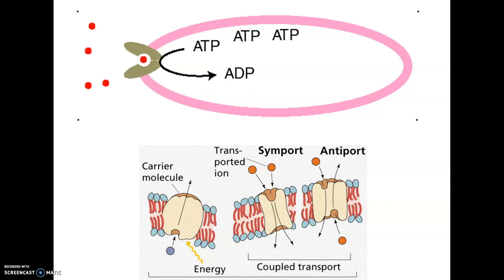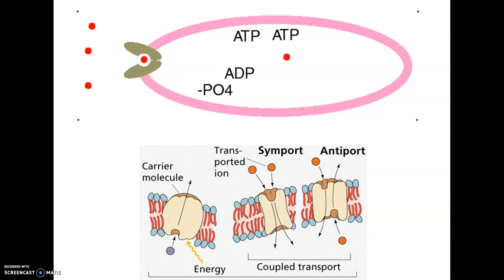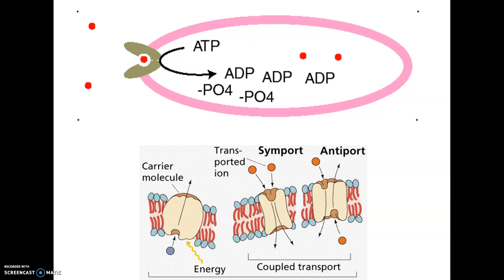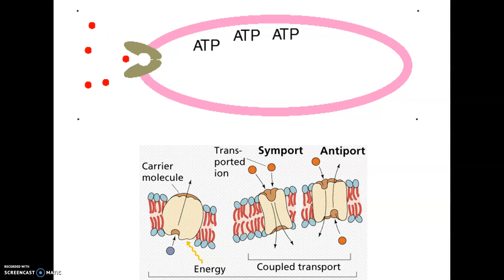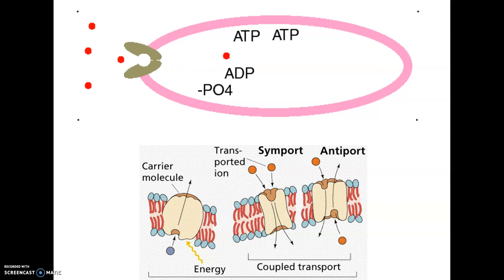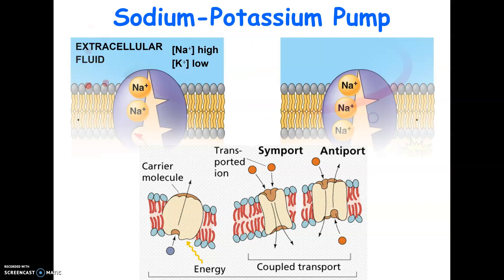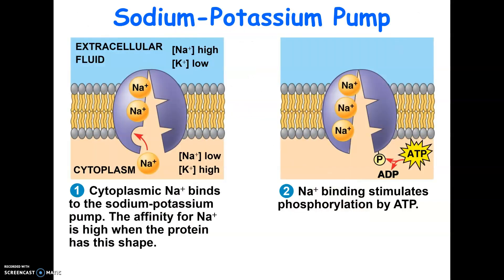If your cell runs out of ATP — remember, your mitochondria are your main generator of ATP — eventually your cells would die. What's really happening in your mitochondria is it's putting the phosphate back on ATP so that ATP is constantly available for cell reactions, one of which is active transport. The most common textbook example of active transport is what's called the sodium-potassium pump.